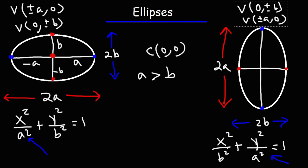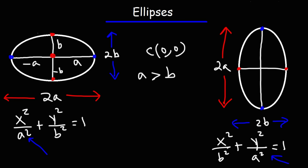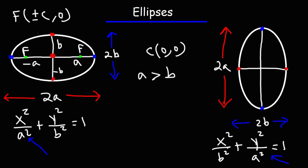Now let's talk about the coordinates of the foci. For the ellipse on the left, the foci will be along the major horizontal axis, c units away from the origin. Adding c gives the right focus and subtracting gives the left focus, so the coordinates of the foci are plus or minus c comma zero. For the ellipse on the right it's zero comma plus or minus c — starting from the center, go up c units and down c units.